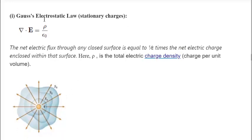The first one is Gauss's electrostatic law, and this is the law for stationary charges. The law reads that the net electric flux through any closed surface is equal to 1 over permittivity — that's the permittivity of free space — times the net electric charge enclosed within that surface. Here, ρ (rho) is the total electric charge density, or charge per unit volume.